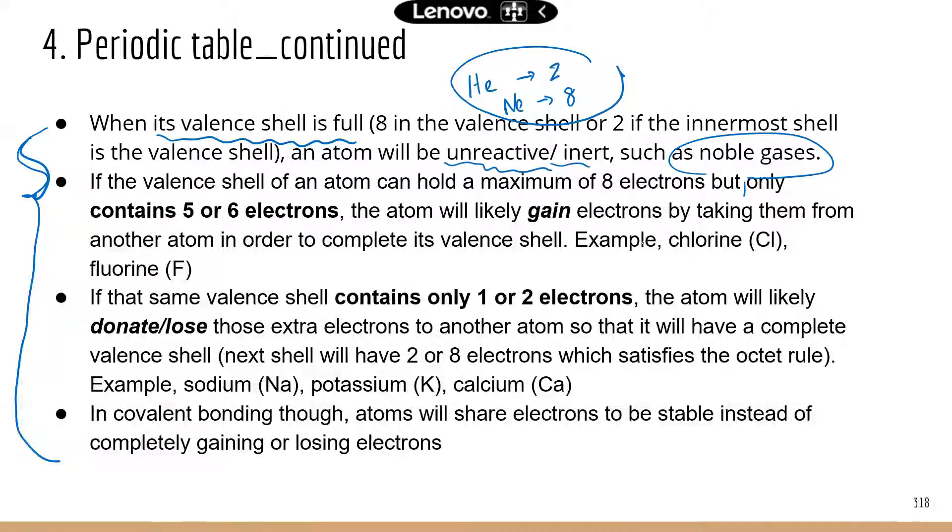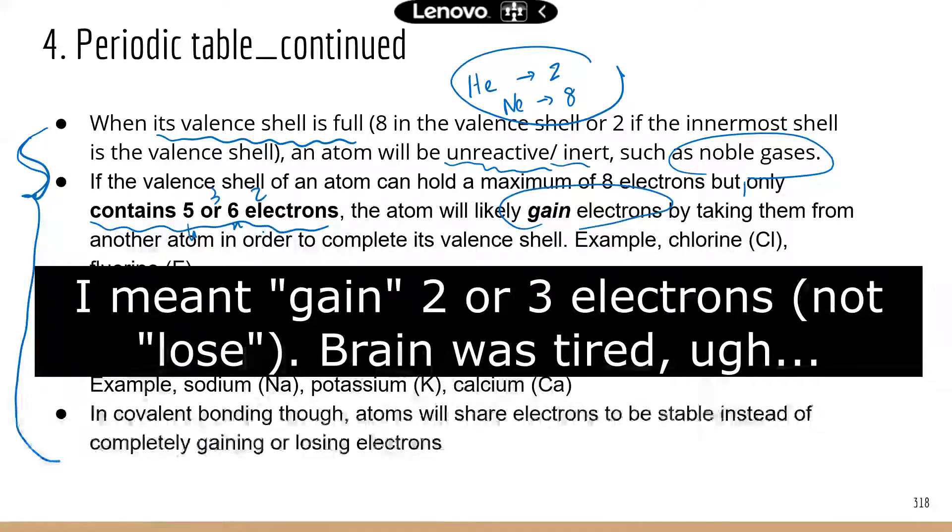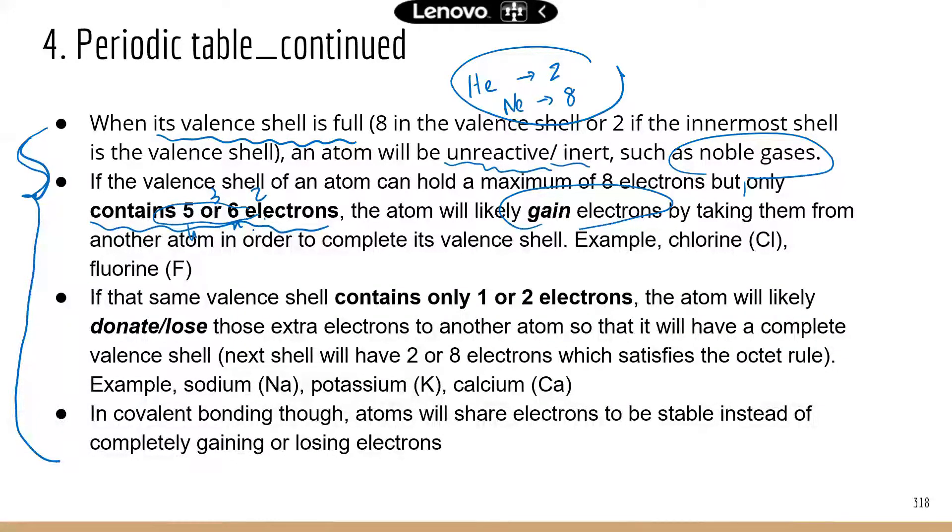Next scenario, if the valence shell of an atom can hold up to eight but only has five or six, then the atom is more likely to gain electrons. So think about this. Which one is easier? Gain three or two electrons, or lose five or six? That's a much bigger number. So it's easier for the electrons to just gain two or three electrons to get to eight.